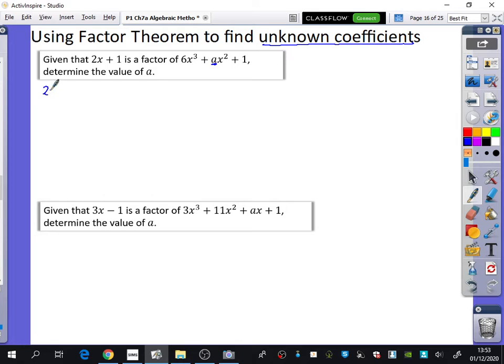Because 2x + 1 is a factor, what do I know using function notation? f of minus 0.5. If we have 2x + 1 equals 0, x would be minus 0.5 or minus 1/2. So we know that f(-1/2) = 0. This is the factor theorem.